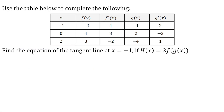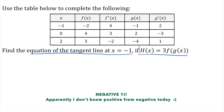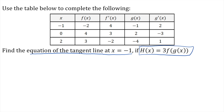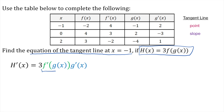Now we want to find the equation of a tangent line at x equals 1. We're given a new function h of x equals 3 times f of g of x. In order to find the equation of a tangent line, we need a point and a slope. If we take the derivative, we'll get the slope. The derivative is going to be 3 times — derivative of the outside function, keeping the inside the same, times the derivative of the inside function — so 3 times f prime of g of x times g prime of x.